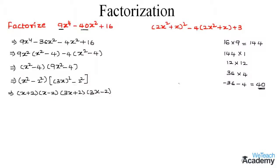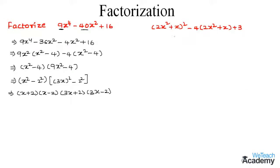Now let us solve the second expression. We observe that there is a term 2x square plus x. Let us consider a is equal to 2x square plus x. On substituting the value as a we get a square minus 4a plus 3.